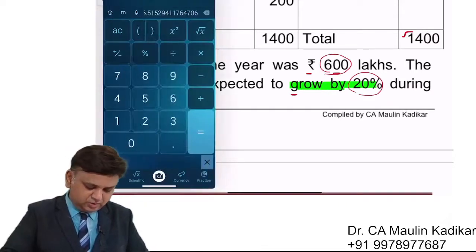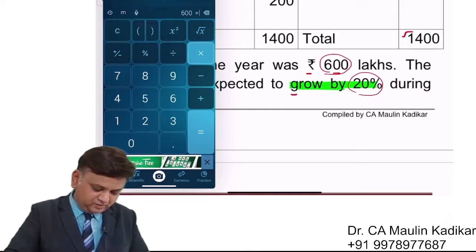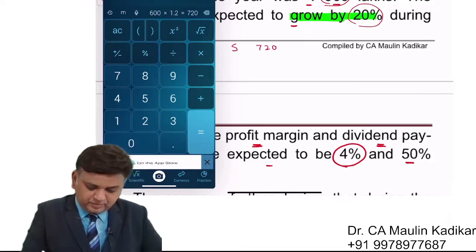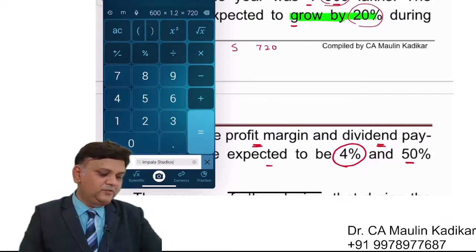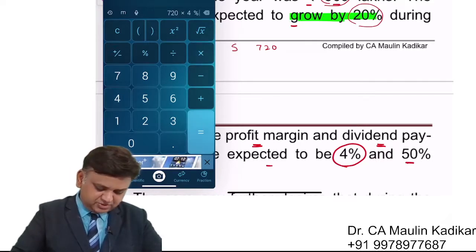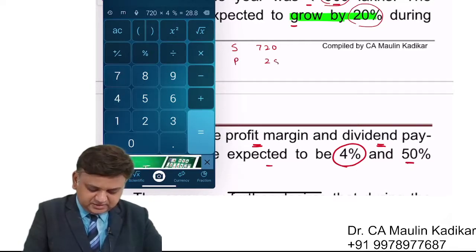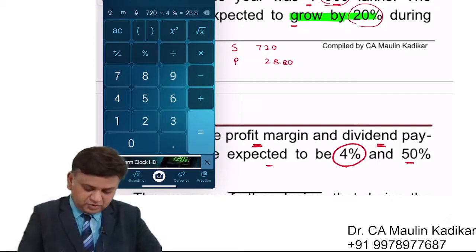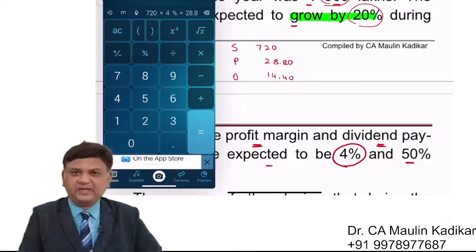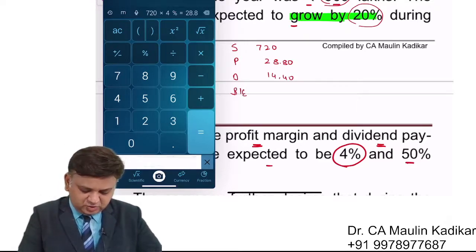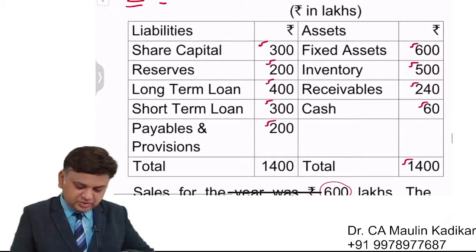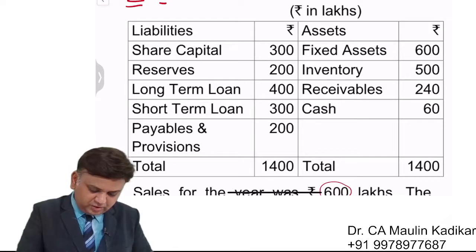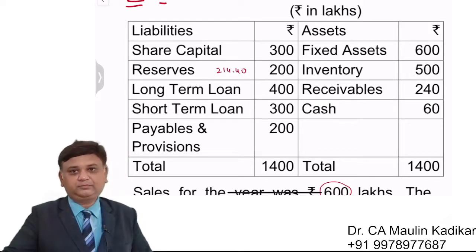Use your calculator: 600 into 1.20. The profit gives a dividend amount of 14.5 lakhs, and since the dividend payout is 50%, retained earnings is also half — that is 14.4 lakhs. So reserves and surplus given in the question as 200 lakhs will increase, and that will increase to 214.4 lakhs.